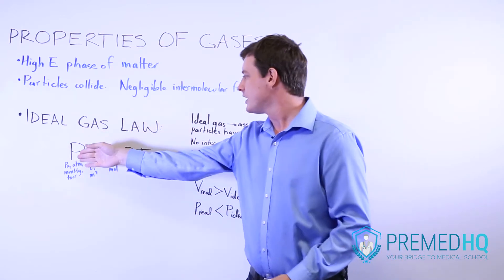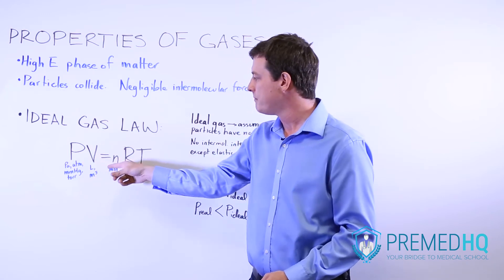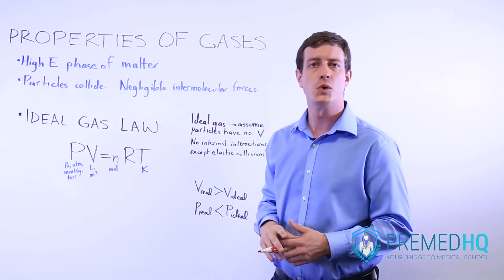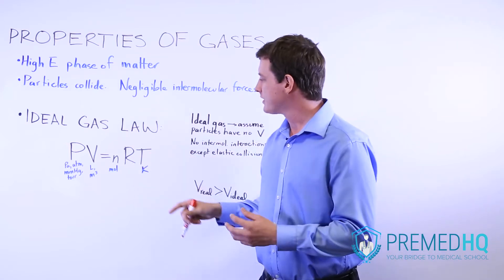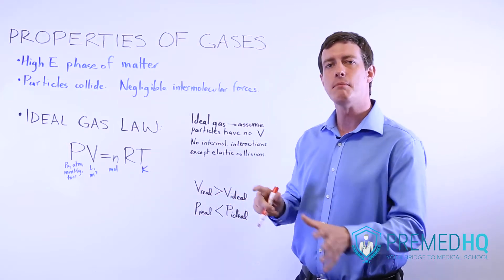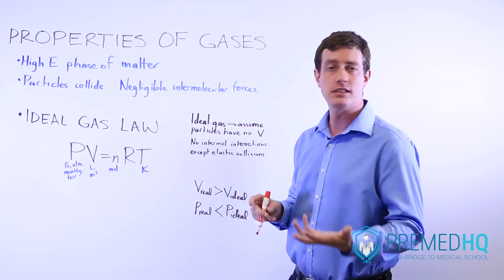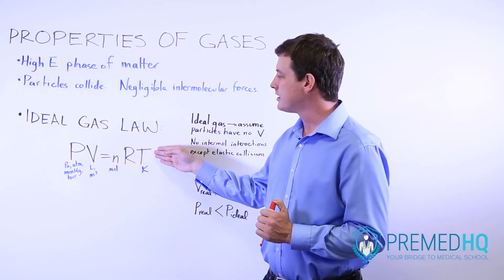P here stands for pressure, V for volume, n stands for the number or the number of moles. R is a gas constant that can take many different forms and have many different units, and T is the temperature.